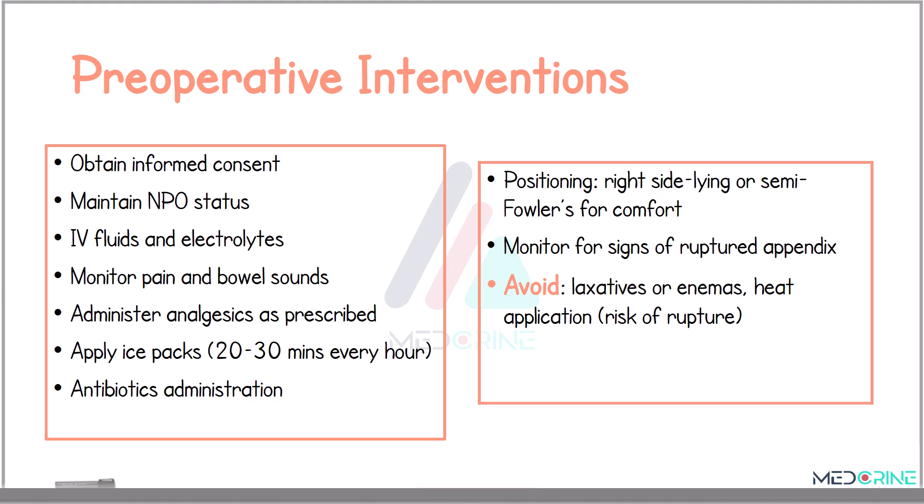Appendectomy, being the most preferred surgical intervention, requires pre-operative interventions and post-operative care. Before surgery, it is crucial to obtain informed consent and ensure the patient remains nil per os (NPO). Administer intravenous fluids and manage electrolytes. Monitor pain and bowel sounds regularly, and administer analgesics and antibiotics. Apply ice packs for 20 to 30 minutes every hour to manage pain and inflammation. Position the patient on the right side or in semi-Fowler's position for comfort, avoid giving laxatives or enemas, and do not apply heat to the abdomen as this increases the risk of rupture.